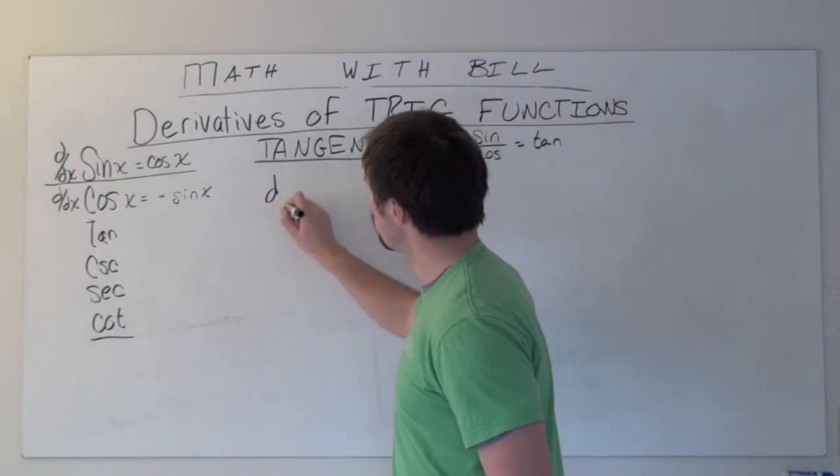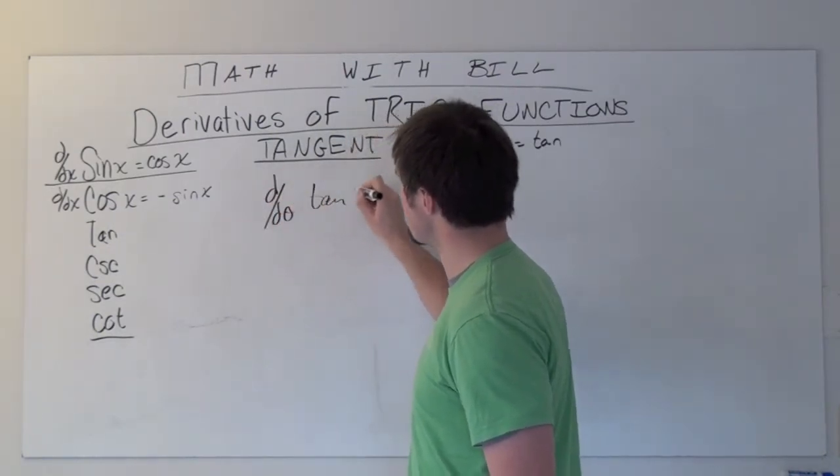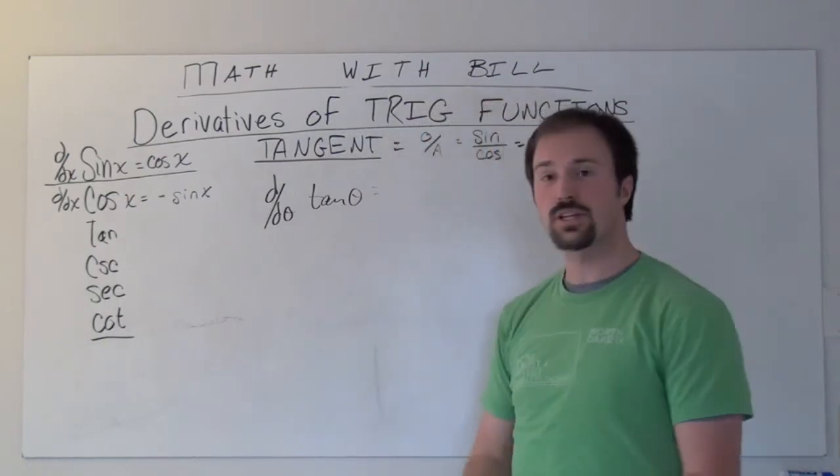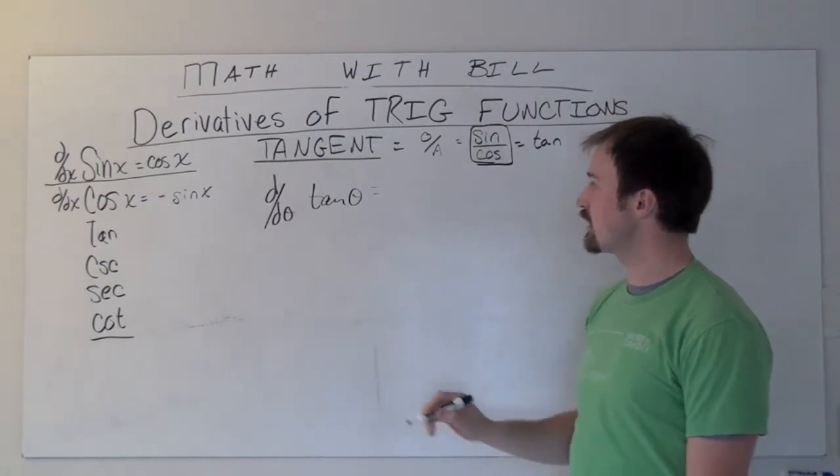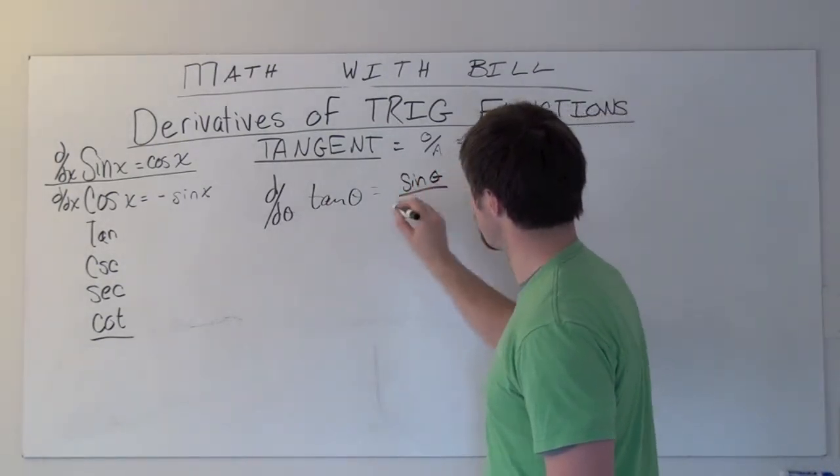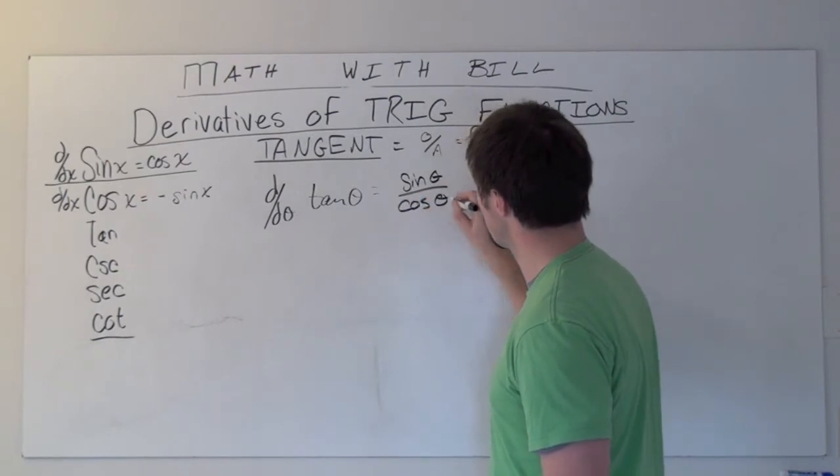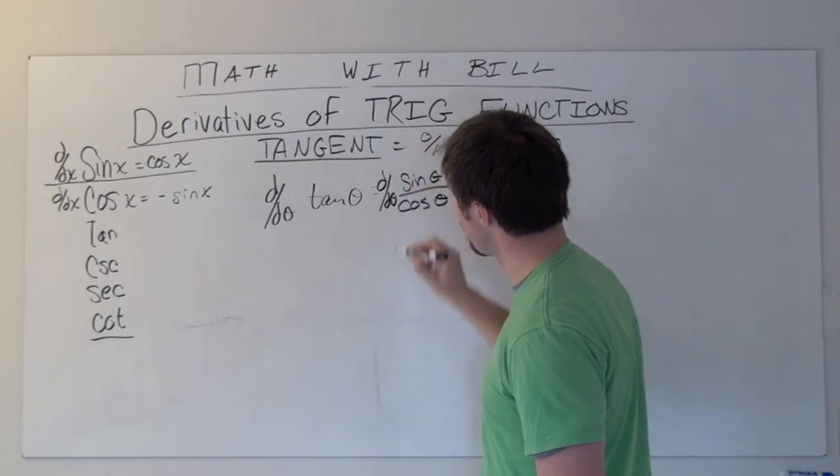So we want to take the derivative with respect to theta of tangent theta. Well, the first thing I'm going to do is rewrite it with an identity. Quotient identity of tangent is sine divided by cosine. So now I've got sine theta divided by cosine theta.